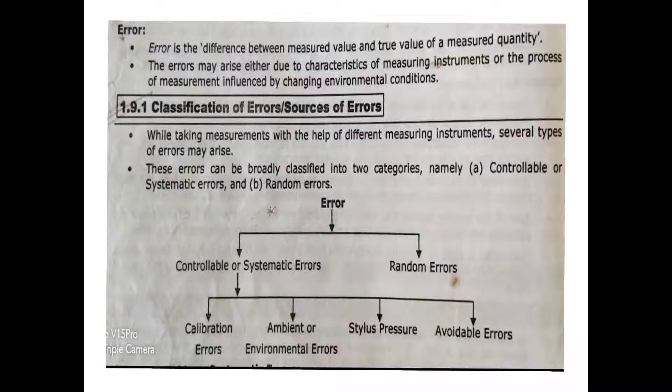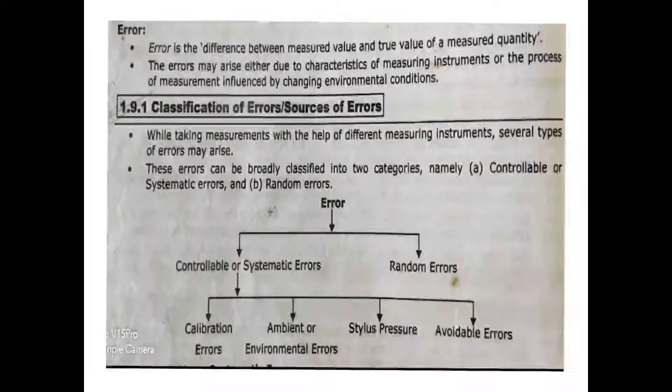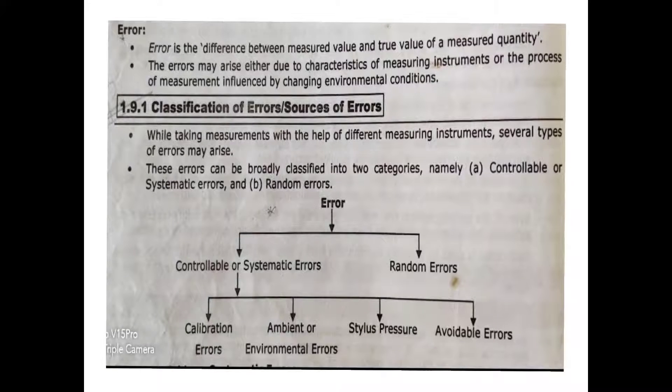Errors are broadly classified into two categories: systematic errors and random errors. Systematic errors have four types: calibration error, environmental error, contact pressure, and observational or avoidable error.